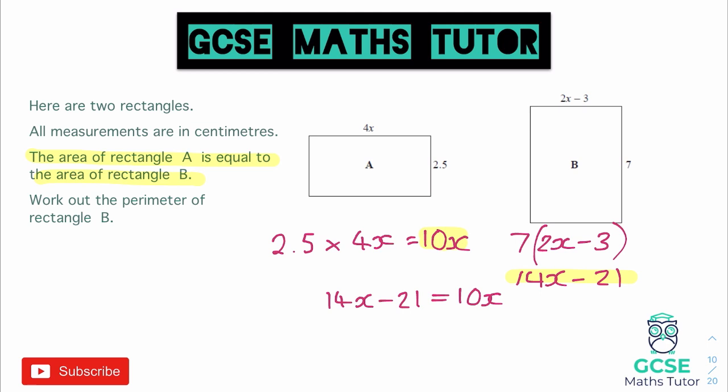So if I subtract 10X from both sides, I would end up with 4X minus 21. And as the right-hand side only had 10X there, that would just now equal zero. So all I've done there is I've subtracted the 10X from both sides.